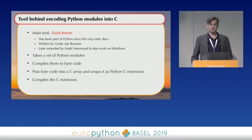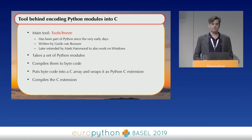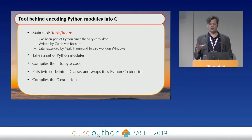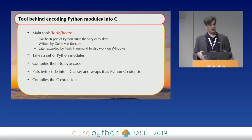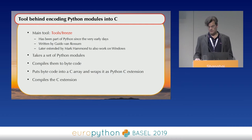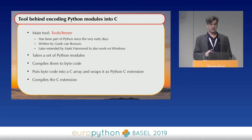How does this work? How many of you know the freeze tool in Python? So the freeze tool takes Python modules, compiles them to bytecode, and stores the bytecode in a C struct or array. Then it puts everything into C files and compiles everything as Python C extensions, and puts that into a module file that you can then link. This is how you can get Python code into an executable or a library. And this tool has been around for ages.